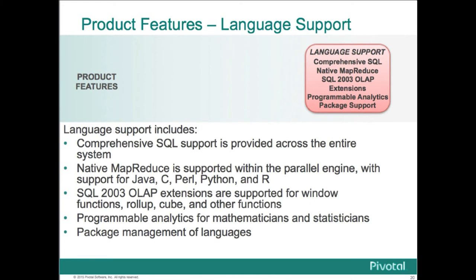In terms of language support, Greenplum database supports comprehensive SQL 2003 with OLAP extensions, with the ability to write user-defined functions in Java, C, Perl, Python, and R. Much of our data science analytic use makes use of these tools, in addition to which we support an open source library called MADlib of commonly used machine learning tools. We also provide package management of these languages.